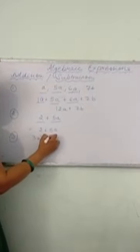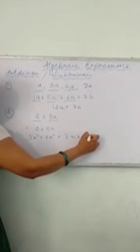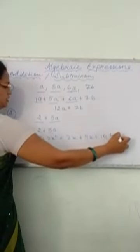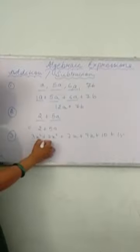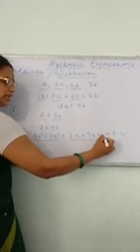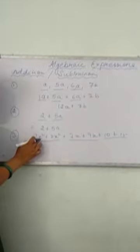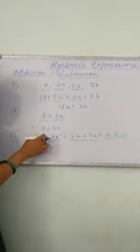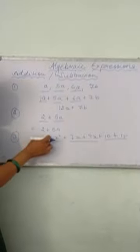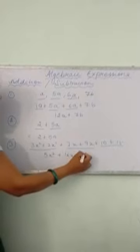Similarly, another example: 3X squared plus 2X squared plus 7X plus 9X plus 10 plus 15. So here these two are like terms, these two are like terms, and these two are like terms — whose variable parts are the same. So 3 plus 2 is 5X squared. Here 7 plus 9 is 16X. And here 10 plus 15 is equal to 25. So this is about the addition.